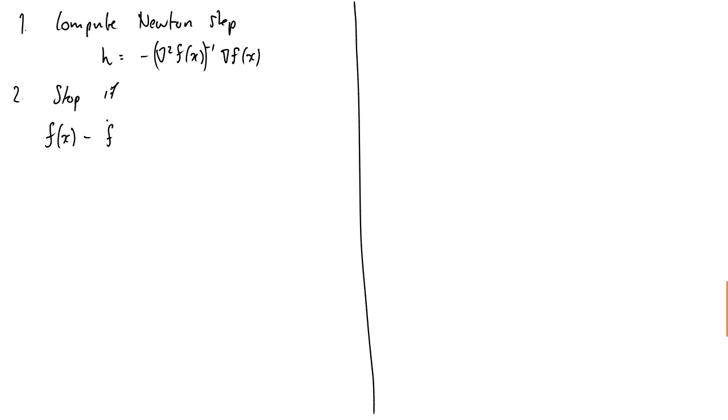Minus our function evaluated... Sorry, our quadratic approximation evaluated at x plus h... Which equals... Now basically, if you just plug that h in to our expression for our Taylor approximation, this is what you get. And this is called the Newton decrement. And if that's less than or equal to some prescribed tolerance, then we can stop.